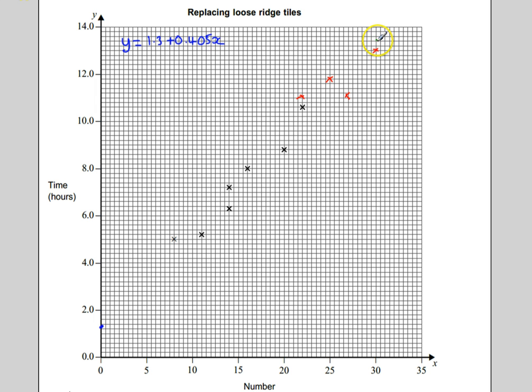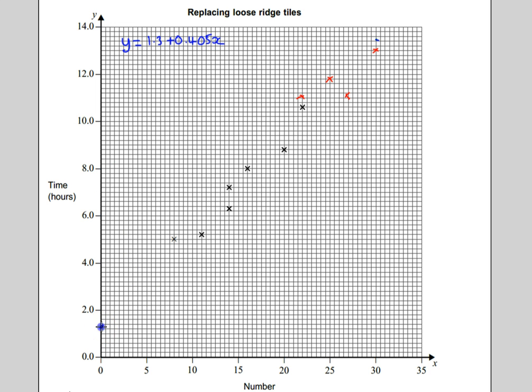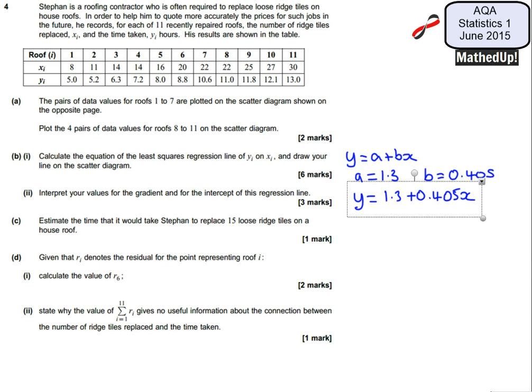So when my x-coordinate is 30 my y-coordinate is going to be 13.45 and that's going to be roughly there. I say roughly, you need to be exact. Right, so I can now draw a line that goes through those two points and so I'll draw a white orange line that goes through those two points. And that there is going to be my regression line. So that's part B completed, or the first part of B.